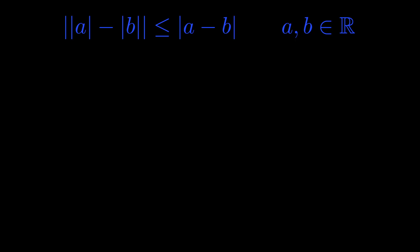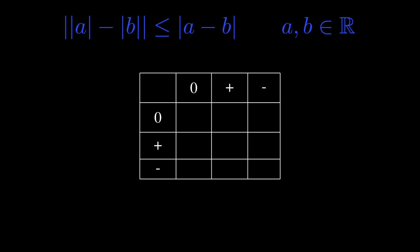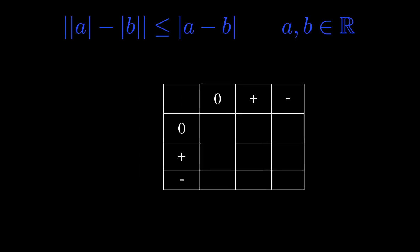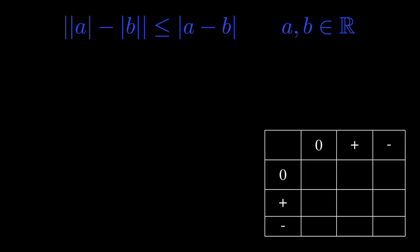In order to prove it, let's consider all the possibilities. So if we have a and b, which are real numbers, they can take on zero, positive values, or negative values, as you can see there in the table.